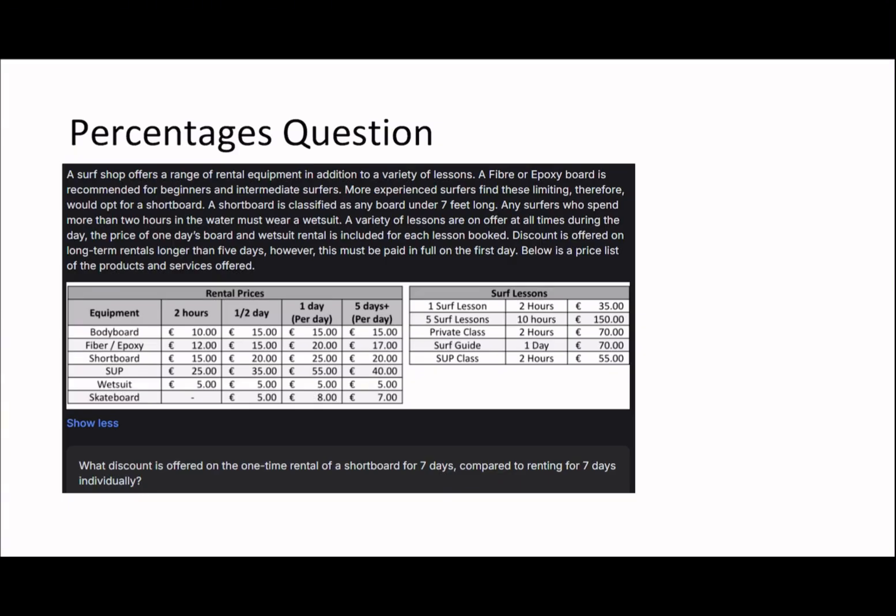Okay, so not too bad, just kind of easing ourselves in, that's all it is. Okay, so on to the next question then. So what discount is offered on the one-time rental of a shortboard for seven days compared to renting for seven days individually? So once again you guys can have a go with this. A shortboard one day, that's going to be 25 times 7 which is going to be 175. Okay, compare. So that's I guess that's seven lots of one day rental, whereas here it says it's 20 pound per day for five plus days. So then 20 times 7 is 140.